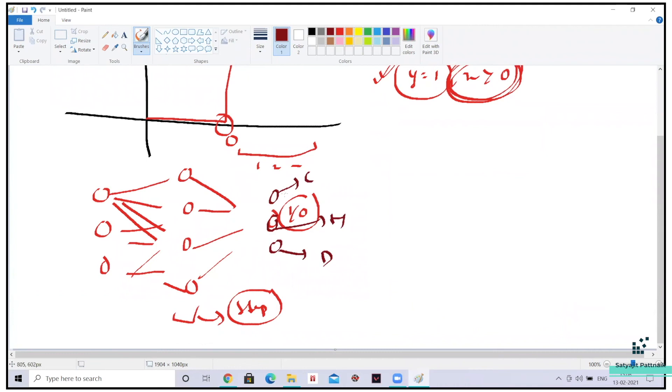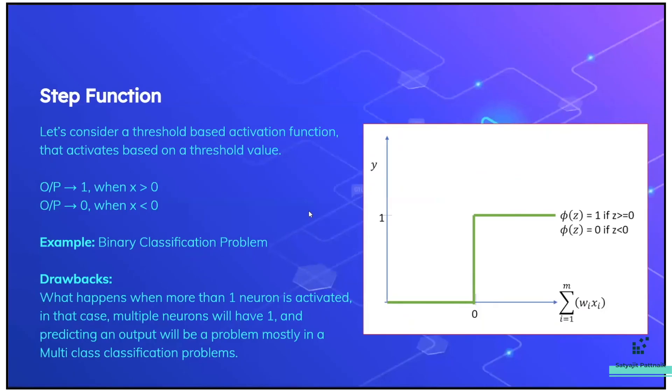If both the neurons are activated, that means this is also one and this is also one. So how can we distinguish whether it's a cat or a horse? That is the reason step functions are not used in multi-class classification problems. That's a drawback with step function. Majorly, it is used in binary classification problems. So that's it about step function.